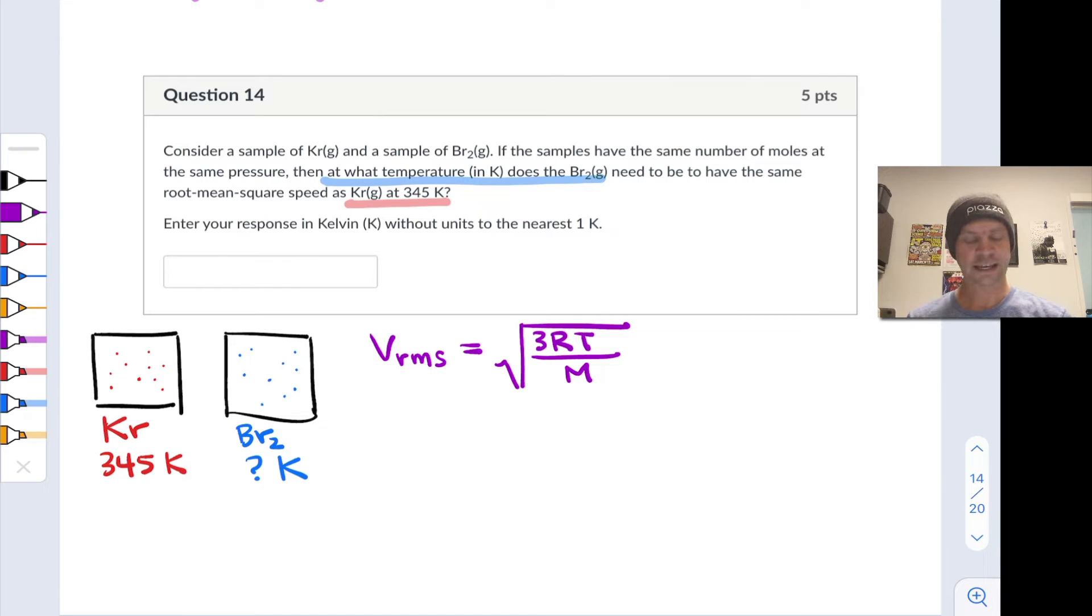Another way we could say this is that the root mean square speed is directly proportional to the square root of the temperature divided by the molar mass. And these are the two key variables in this problem. We've got the temperature in the form of 345 Kelvin and the unknown temperature of the bromine sample. And we've got the molar masses, which are also known indirectly from the periodic table. So for example, krypton here has a molar mass of 83.8 grams per mole, and Br2 has a molar mass of 159.8 grams per mole.